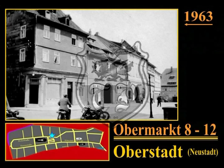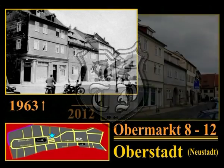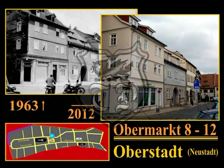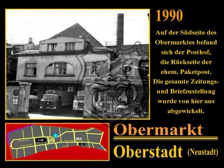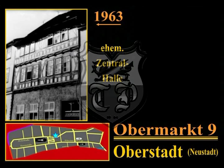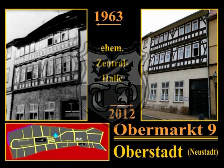Mühlhausen zeichnete sich bis 1989 durch eine sehr hohe Anzahl von Gaststätten, Restaurants und Hotels aus. Drei Gaststätten gab es allein auf dem Obermarkt zwischen Bollstädter Gasse und Heuergasse: im Obermarkt Nummer 7 die Goldene Sonne, im Obermarkt 8 den Goldenen Stern und im Obermarkt 9 die Zentralhalle. Die Südseite des Obermarktes zeigte den Posthof, die Rückseite der alten Paketpost. Seit 1781 gab es am ehemaligen Salzmarkt 89 eine Gaststätte – damals hieß sie der Halbe Mond, ab 1790 Stadt Amsterdam. Ende des 19. Jahrhunderts noch einmal umbenannt in Zentralhalle, wurde die Gaststätte 1930 geschlossen.